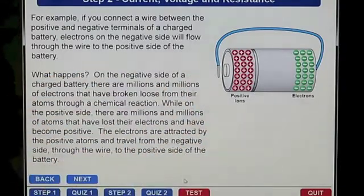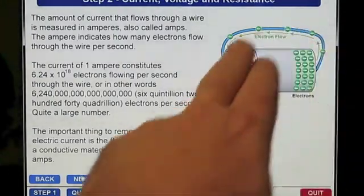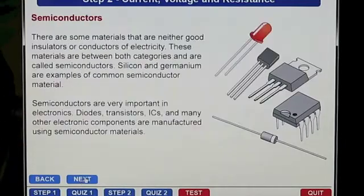At the conclusion of the first quiz, the guided training presents a second educational course. In this case, the student is taught how electrons flow, and the differences between conductors, insulators, and semiconductors.